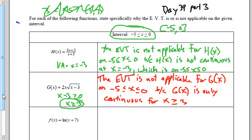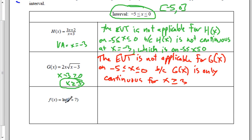The last example, f of x equals natural log of x plus 7. I know you can only take the natural log of positive values, you can't take the natural log of 0 or a negative number. So x plus 7 must be greater than 0. Therefore, x must be greater than negative 7.